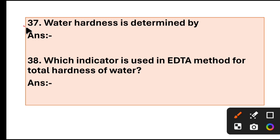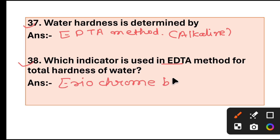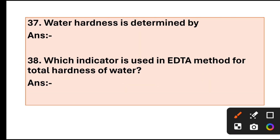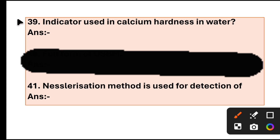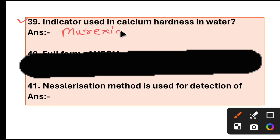Question 37: Water hardness is determined by EDTA method in alkaline condition. Question 38: Which indicator is used in EDTA method for total hardness of water? Question 39: Eriochrome Black T indicator. Question 39: Indicator used in calcium hardness in water? Answer: Murexide indicator.